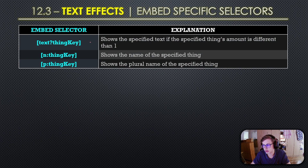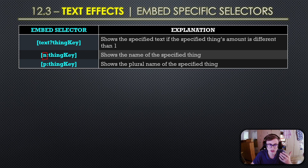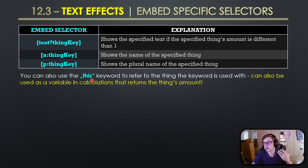The first selector shows specified text if the specified thing's amount is different than one — this is very useful if you want your embeds to be grammatically correct. Next we have the N selector which displays the name of the specified thing, and last but not least the P selector which displays the plural name of the specified thing. Also worth mentioning: you can use the 'this' keyword to refer to the thing the keyword is used with, and it can also be used as a variable which returns the thing's amount throughout your entire source file.